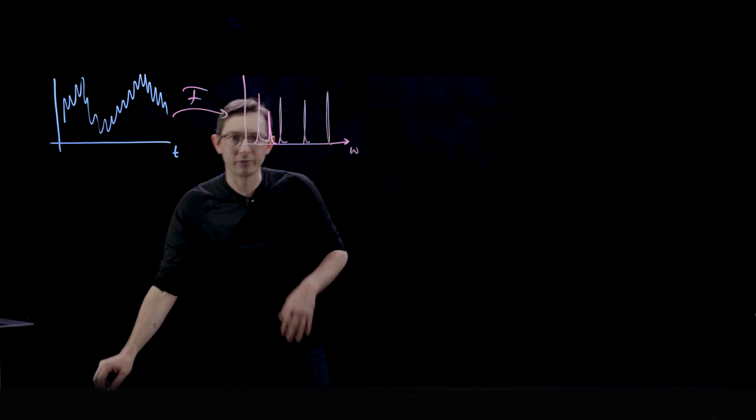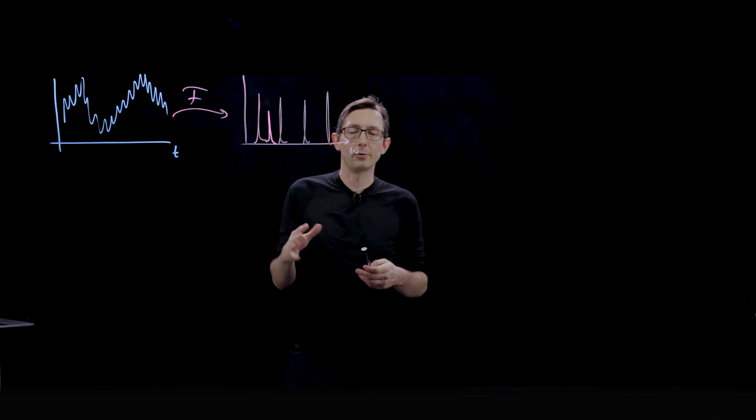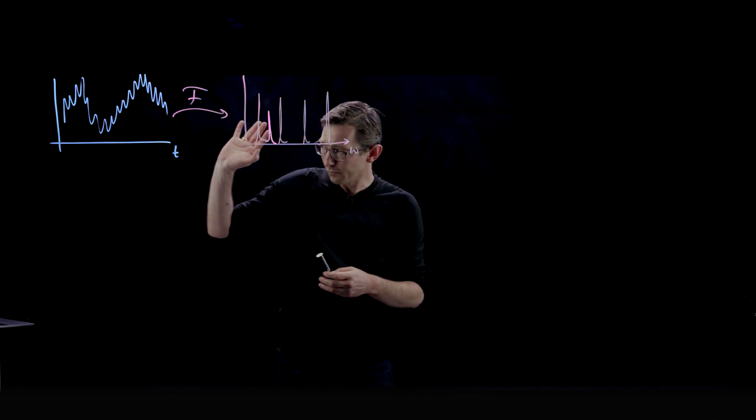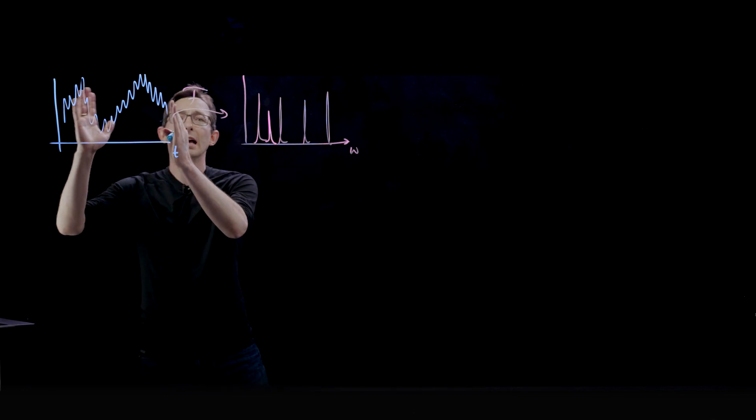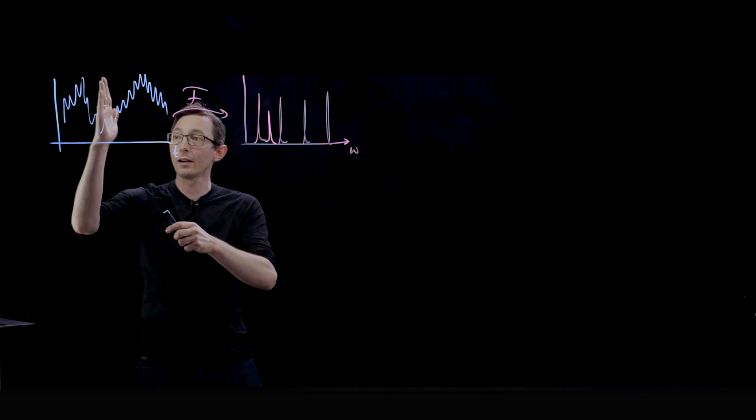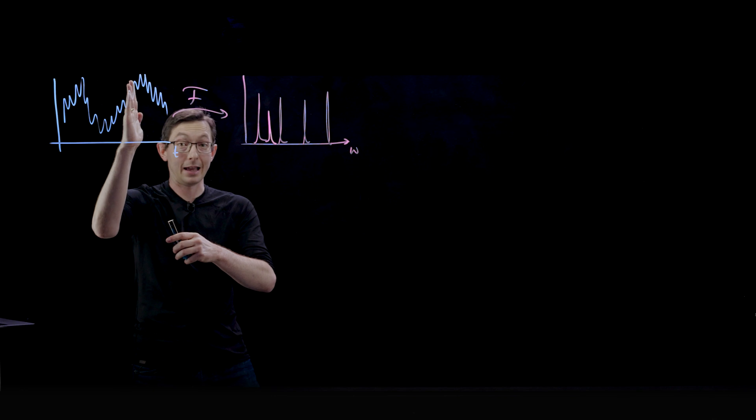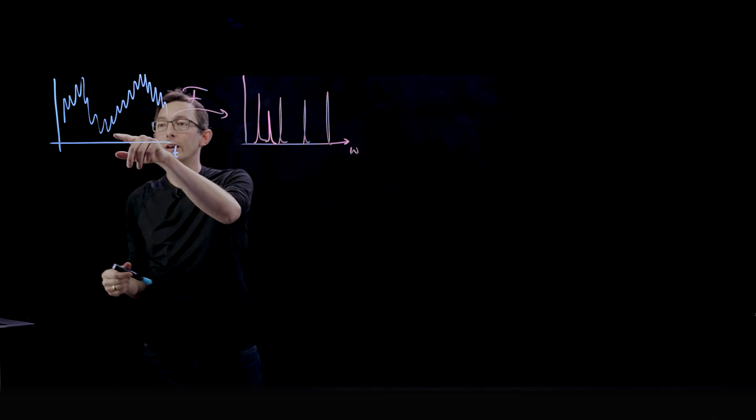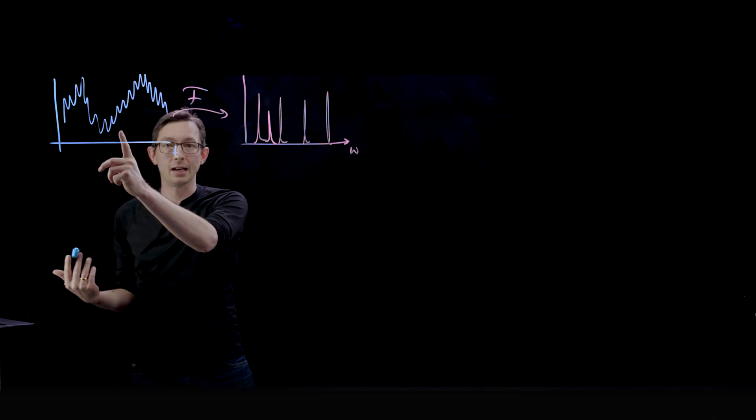But this gets to the heart of the spectrogram and the Gabor transform is this idea that if I look at my signal as a function of time, I have precision information about where in time I am, but I don't know what the frequency is at that instant in time. It could be some combination of frequencies.